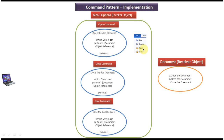Similarly, if the user clicks on close, the invoker object will call the execute method of the close command, which in turn calls the document object close method to close the document. If the user clicks on save, it will call the save command execute method, which uses the document object reference to call the document object save method to save the document. So the invoker doesn't know how to handle the request — it uses the command object execute method to call the receiver object methods.